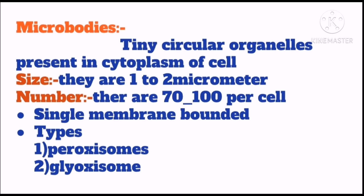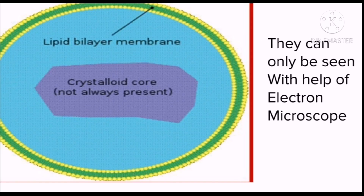They are only present in eukaryotic cells. As we know, there are two types of cells: prokaryotic, which doesn't have a membrane-bounded nucleus and organelles, and eukaryotic, which has a membrane-bounded nucleus and organelles. Because microbodies are surrounded by a membrane, they are not present in prokaryotic cells. They are very small in size, with a diameter between one to two micrometers. This is how microbodies look like. They are surrounded by a single membrane made up of a lipid bilayer and protein — the same composition as that of the cell membrane. They can only be seen by electron microscope.